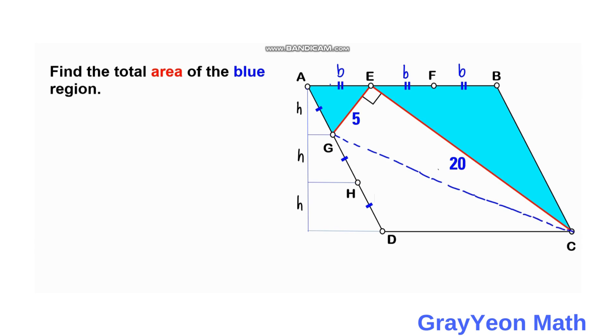And we can label this small triangle, the blue triangle as area 1, this as area 2, and this as area 3. And this as area T, the area of the right triangle.